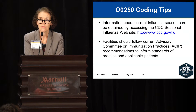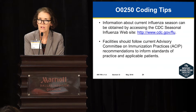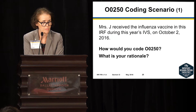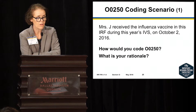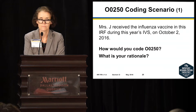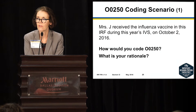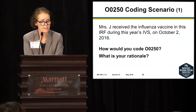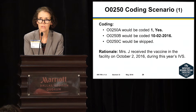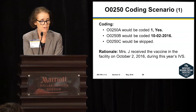We are currently in the influenza season but not in the vaccination season. The CDC website is a great place to go for any questions. Coding scenario for O0250: Mrs. J received the influenza vaccine in the IRF during this year's influenza vaccination season on October 2, 2016. O0250A is yes, and we enter the date as 1002 2016. We can skip C because we don't need to give a reason we didn't give it, because we did.